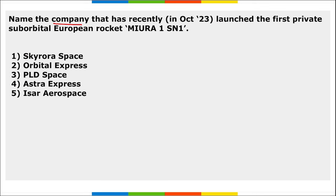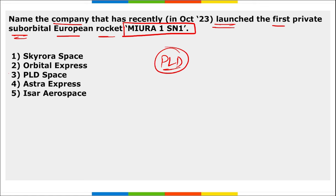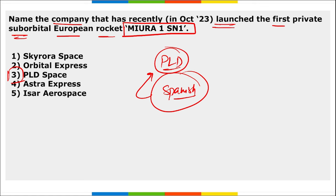Next: name the company that recently launched the first private sub-orbital European rocket, MIRA 1 SN1. It was launched by PLD Space — a Spanish company. The reusable rocket was launched from the Spanish National Institute for Aerospace Technology in Spain.